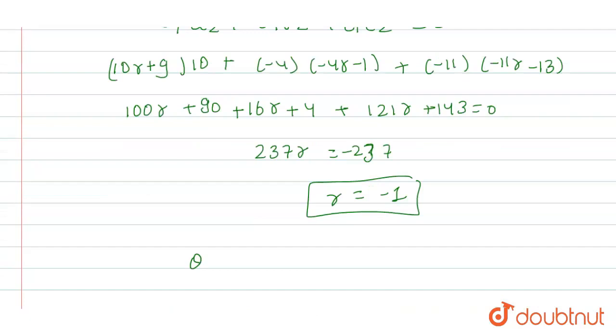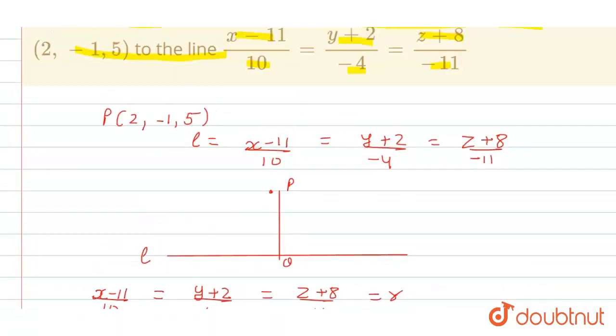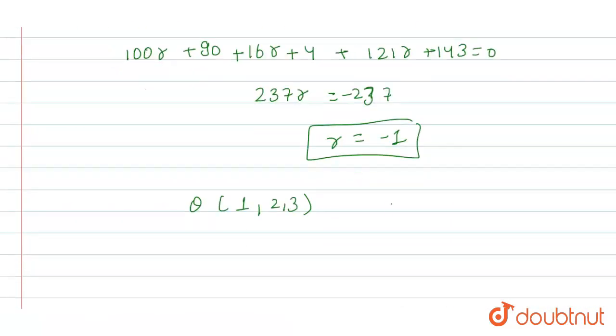We will put our R value into this to find Q coordinate, and Q is foot of perpendicular. So when we put into our Q coordinates, our Q coordinates will become (1, 2, 3).